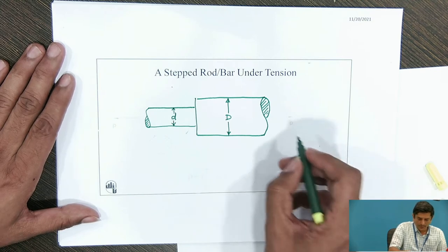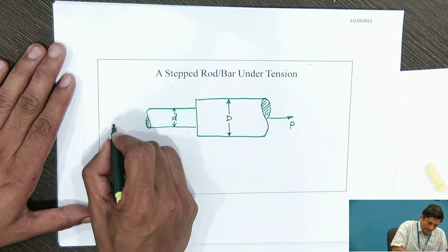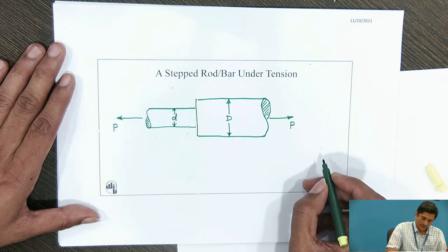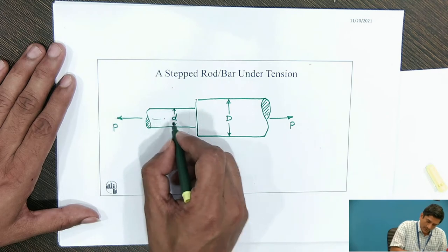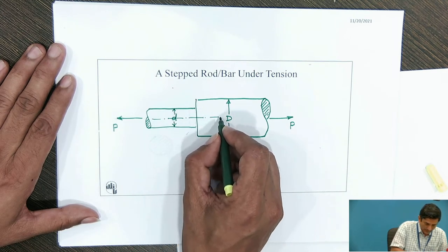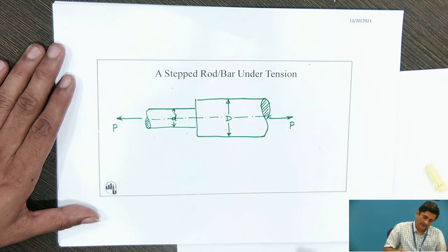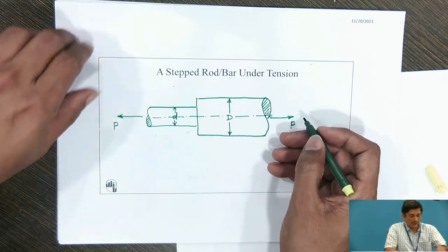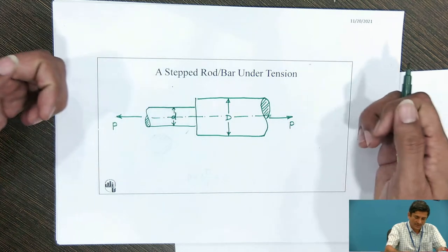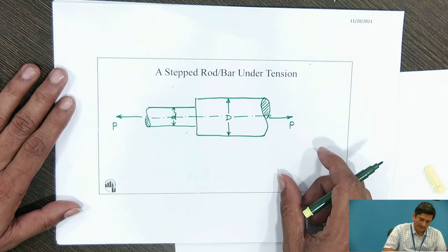This component is loaded under tension — it is a pull force P. It is to be understood that the force is in the line of the axis; it is axial loading. Therefore, it is a pull force and the component is going to be stretched. Now it is interesting to write the design equation for this component.